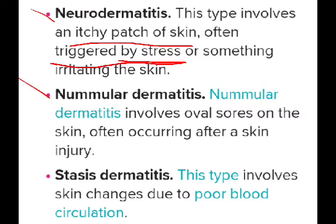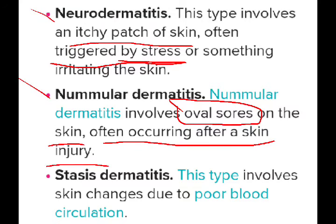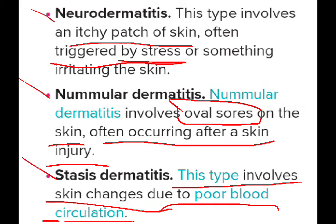The sixth type is nummular dermatitis, which involves oval-shaped sores on the skin, often occurring after a skin injury. The seventh type is stasis dermatitis, which involves skin changes due to poor blood circulation.